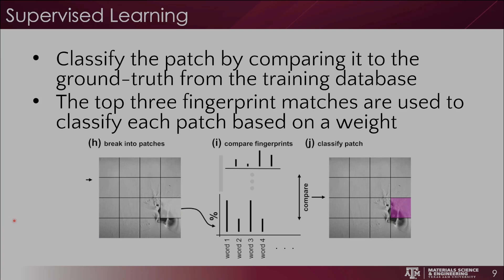Briefly on supervised learning: it classifies each patch by comparing it to the ground truth from the training database. The top three fingerprint matches are used to classify each patch based on a weight. If the top match says recoater streaking but the next two say recoater hopping or part failure, it will still be classified as recoater streaking because it's the highest. However, if the next two cumulatively add up more than the first, the classification will go to the majority — whichever the patch most identifies with based on the accumulation of words in the fingerprint.